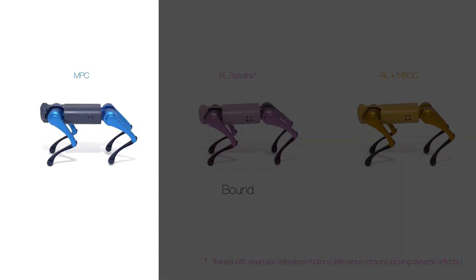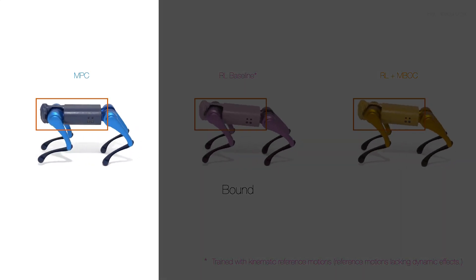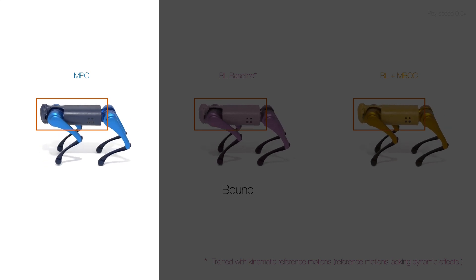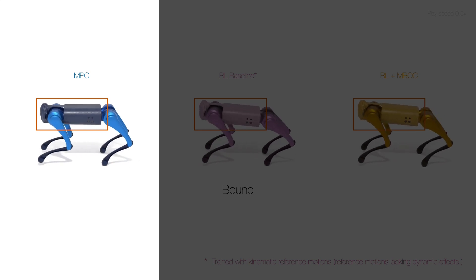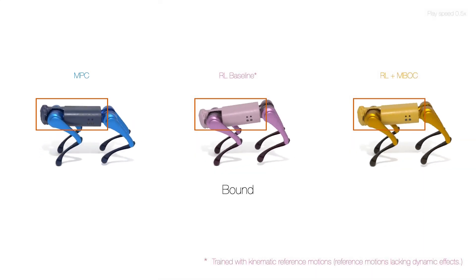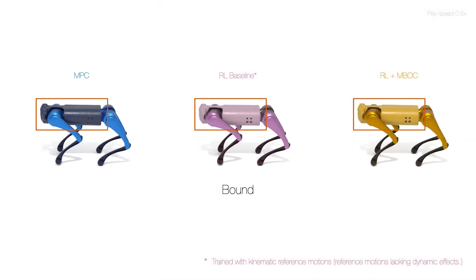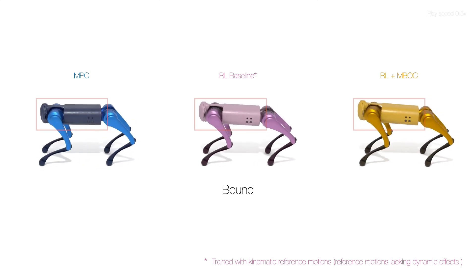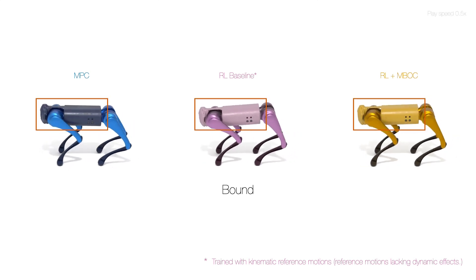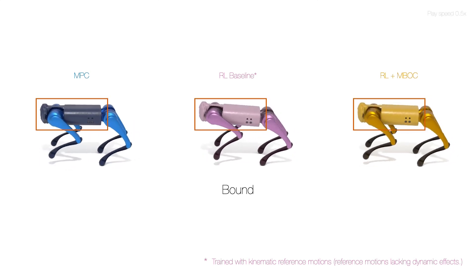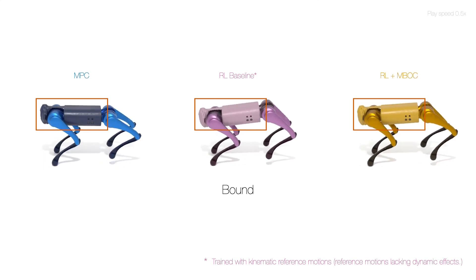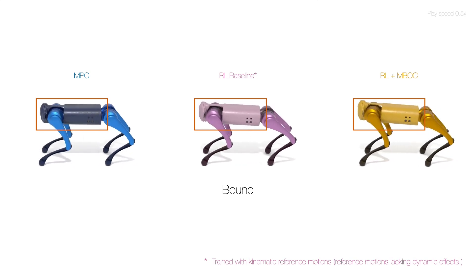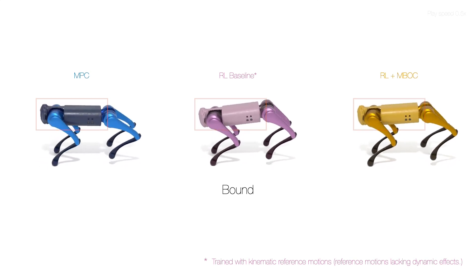The model-predictive controller based on a simple model fails to capture the rotational dynamics of bound motions. Our policy is trained to imitate the reference motions generated by the same model, but the RL generalizes the motions over the whole-body dynamics. As a result, it learns to produce small rotational movements rather than strictly adhering to the reference motions.